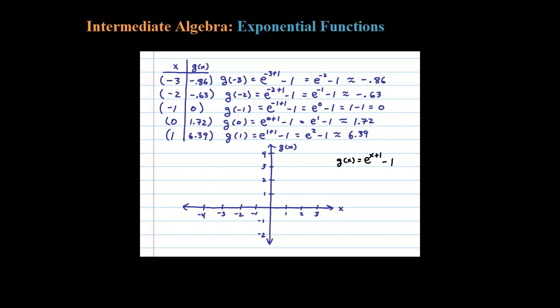We have five points to plot. Let's plot: (-3, -0.86), doesn't have to be perfect, (-2, -0.63), (-1, 0) - there's our x-intercept, (0, 1.72), and then (1, 6) which is off the scale. You can see the exponential growth.